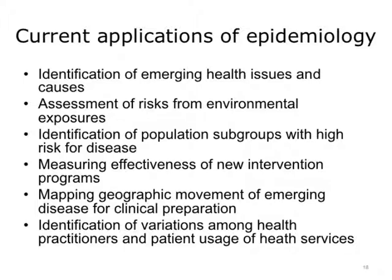In looking at mapping geographic movement of emergent disease and clinical preparation, we can see that this is both an increasingly popular modern application of epidemiology while also being its original, historic application. For example, when the swine flu became an epidemic in 2009, many different websites began to track and map new incidents of swine flu, providing emergency information to the public while also helping public health agencies to prepare for potential epidemics. Another epidemiological application includes the identification of variations among health practitioners and health services provided to local communities, and patient usage of these health services. This information allows us to study potential differences in health outcomes based on variations in geographical locations where practices differ or where health resources are absent.